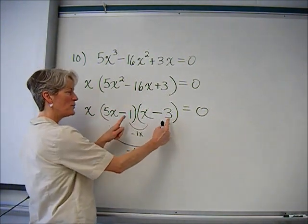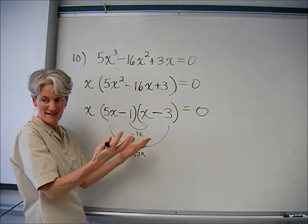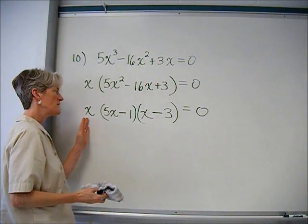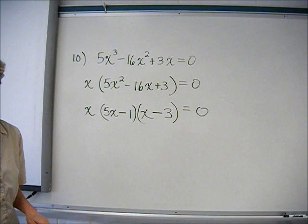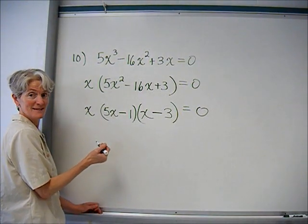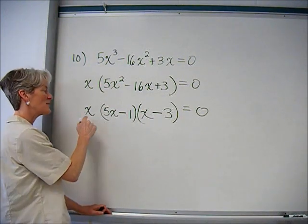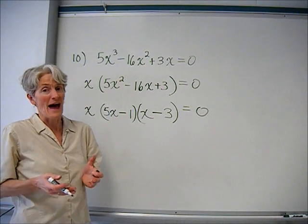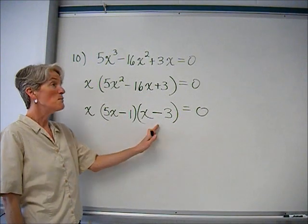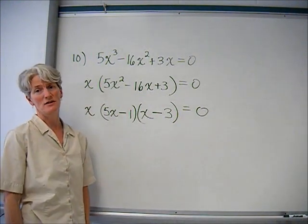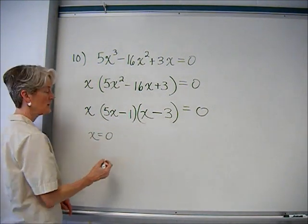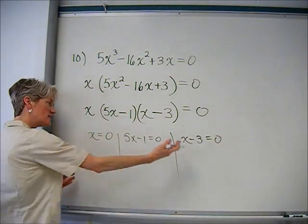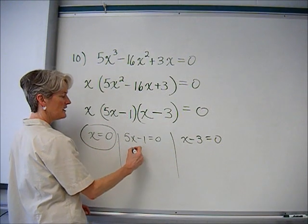If you hadn't seen that right away you would have tried 3 here and 1 there, quickly discovered it doesn't work, and tried the other way. Now I've got three things multiplied together equaling zero. Sometimes students wonder: why does this work? What's so special about zero? The cool thing about numbers is when you multiply two numbers and get zero, one of them or both must equal zero — it's unique to zero. So x can equal zero, or 5x minus 1 equals zero, or x minus 3 equals zero.